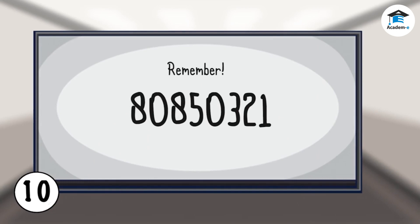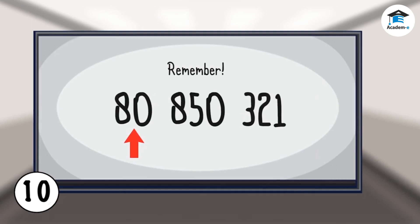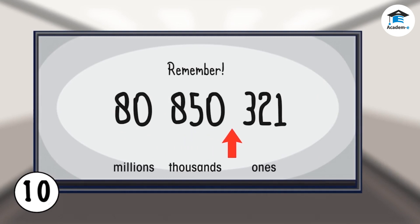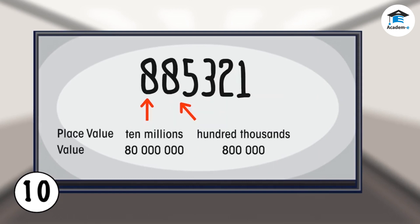Remember, in writing numbers, they should be in groups of three, starting from the right. But they are read starting from the left, period by period. The value of each digit depends on the place value that it occupies. The zeros are important placeholders.